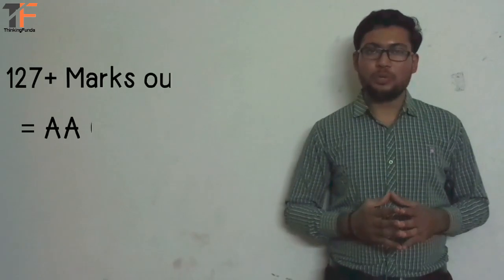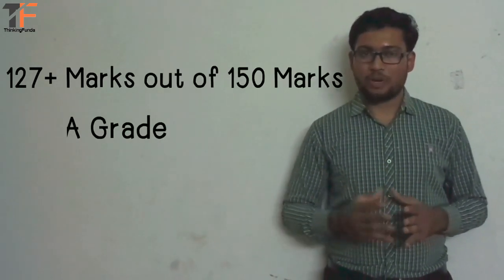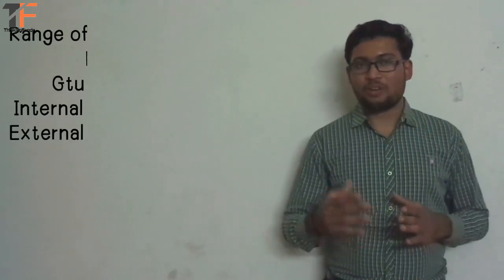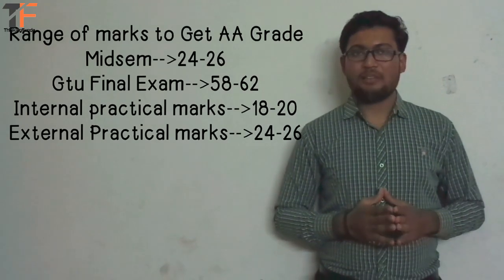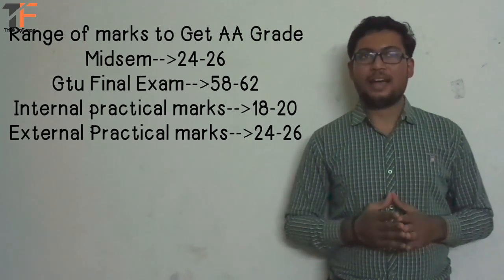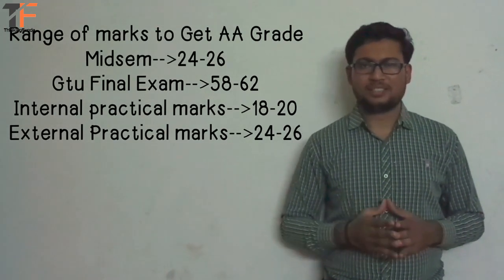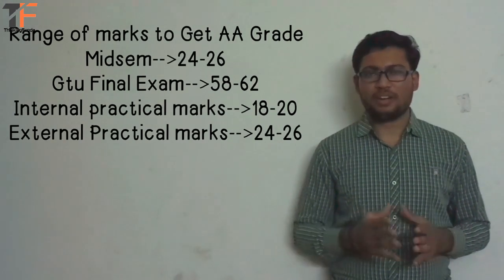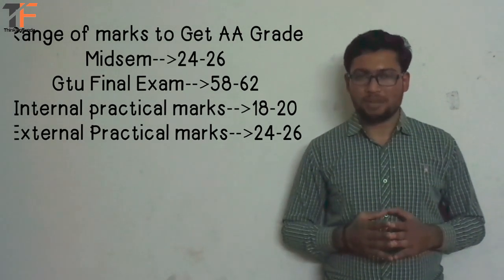And if you want to have AA grade in that subject, you need to score 127 plus marks out of 150 marks. If you score 24 to 26 marks in assignment, 18 marks in mid-sem, and 58 to 62 marks in GTU examination, and around 18 marks in internal viva and around 25 in external viva examination, then you can easily get 127 plus marks and conquer AA grade.